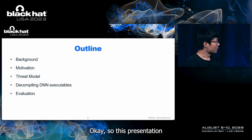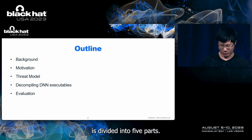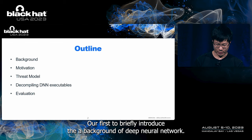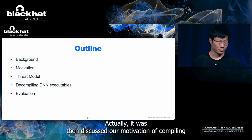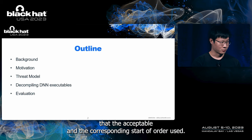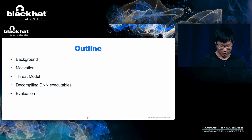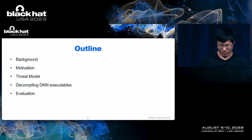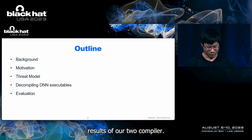This presentation is divided into five parts. First, I'll briefly introduce the background of Deep Neural Network executables. Then discuss our motivation for decompiling them and the corresponding threat model. In the rest, I will present the design and evaluation results of our decompiler.